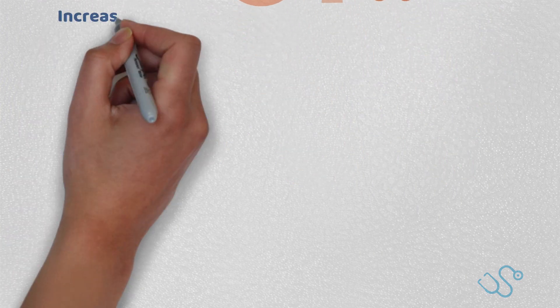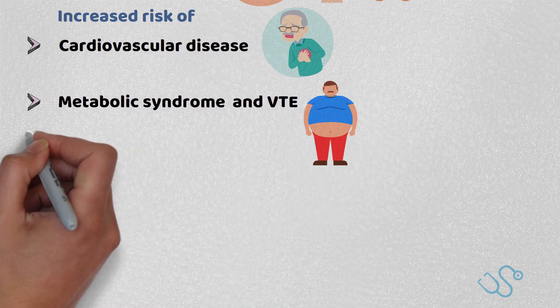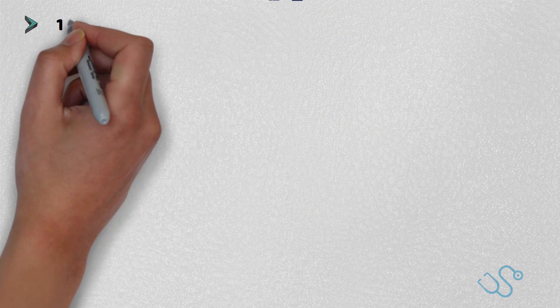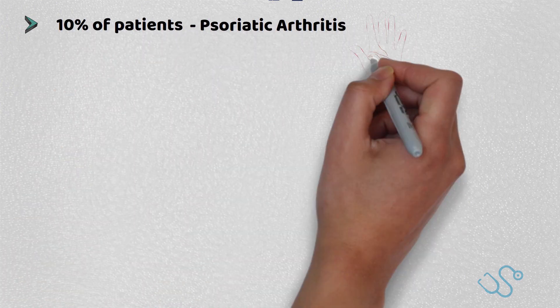As mentioned, psoriasis carries an increased risk of cardiovascular disease, metabolic syndrome, and VTE, as well as an understandable psychological burden. Additionally, 10% of patients with psoriasis may go on to develop psoriatic arthritis.